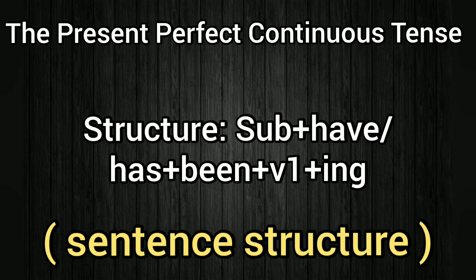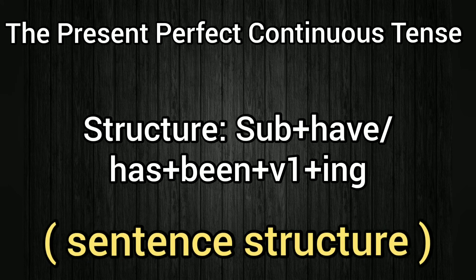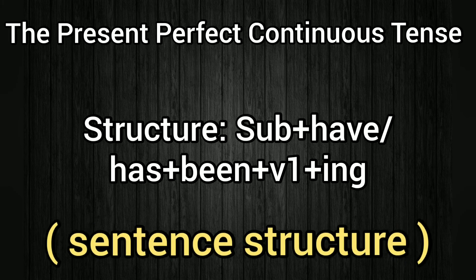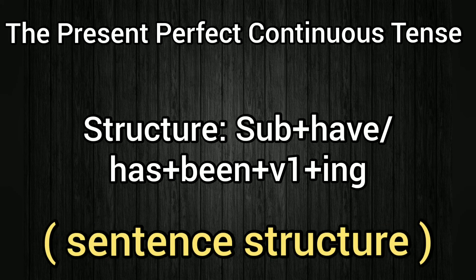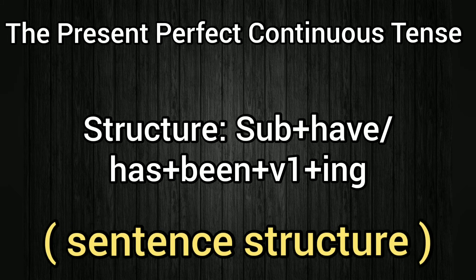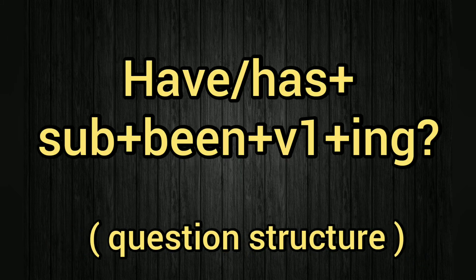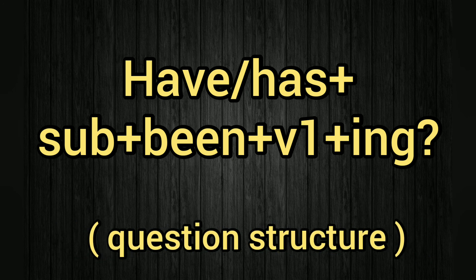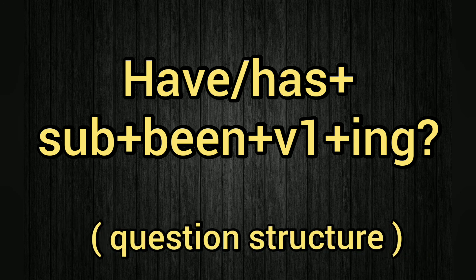Now, the questions in the present perfect continuous tense. In this tense, the sentence structure is subject plus have or has plus been plus V1 plus -ing. The question structure is have or has plus subject plus been plus V1 plus -ing.